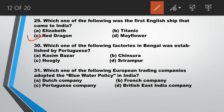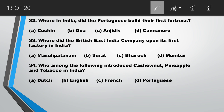Question number 30: which one of the following factories in Bengal was established by the Portuguese? Answer is C, Hooghly. Question number 31: which one of the following European trading companies adopted the Blue Water Policy in India? Answer is C, Portuguese Company. Question number 32: where in India did the Portuguese build their first fort? Answer is A, Cochin.